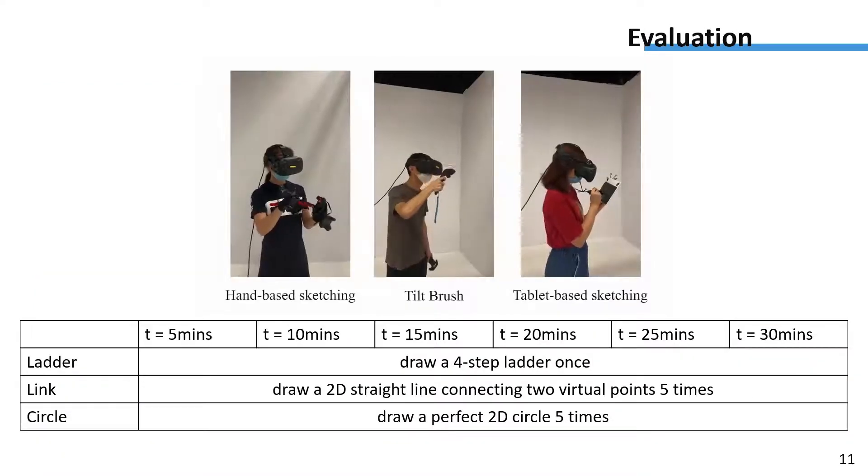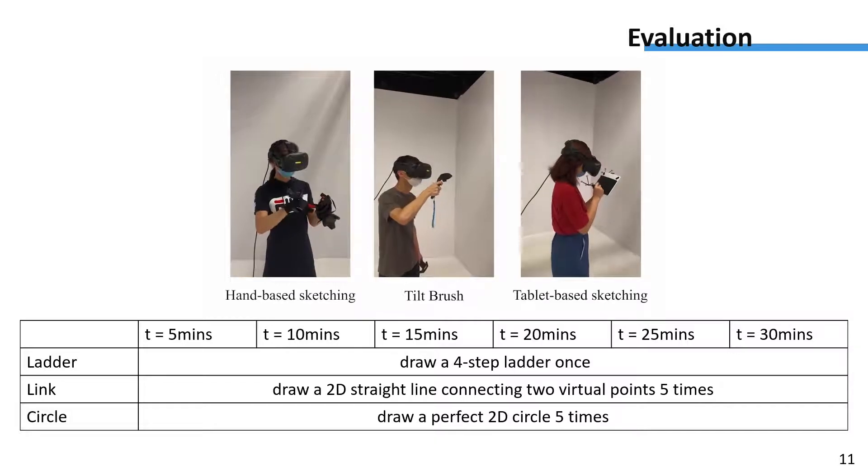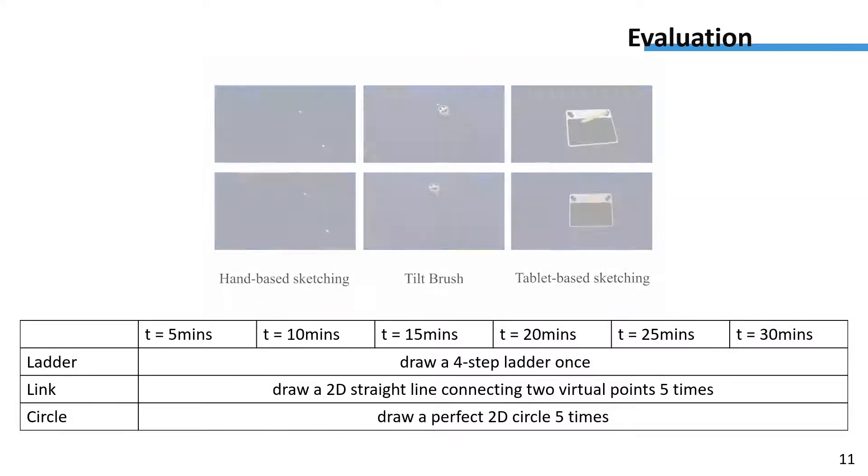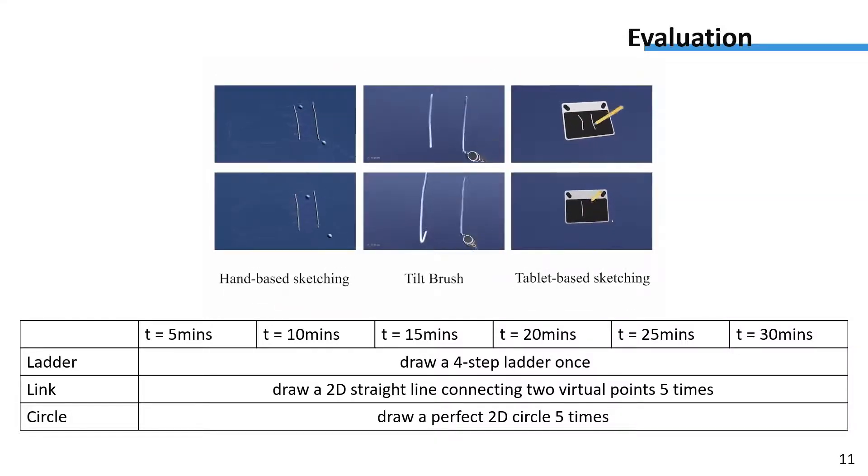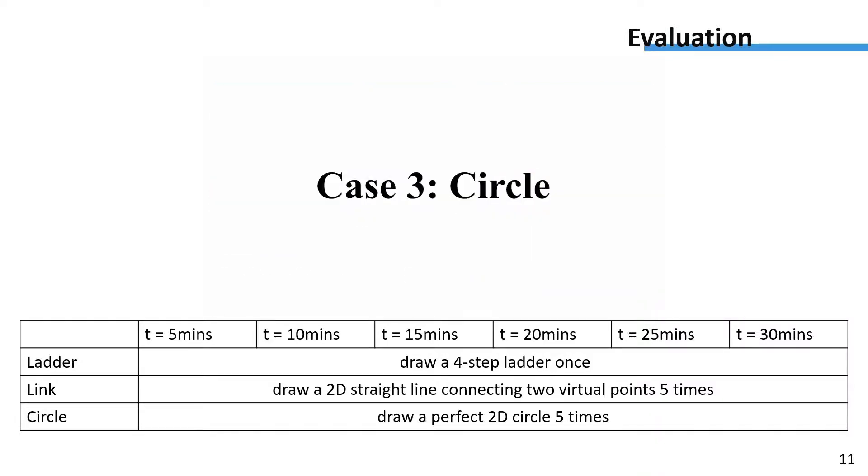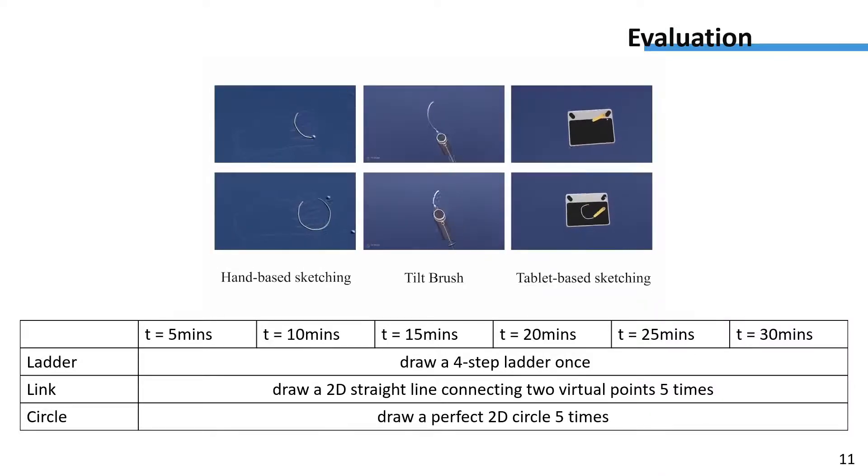To investigate effectiveness and the usability of our system, we conducted a user study in which we compared the performance in terms of drawing time, overall accuracy, and robustness. Twelve volunteers were recruited to sketch in three modes: sketch on a tablet, sketch on a hand, and sketch in mid-air with Google Tilt Brush. Our tasks include drawing a perfect 2D circle 5 times, drawing a 2D straight line to connect two virtual points 5 times, and drawing a 4-step ladder once every 5 minutes.